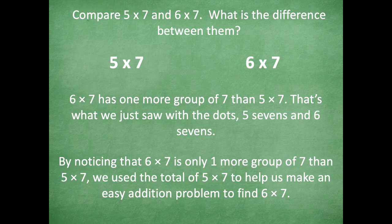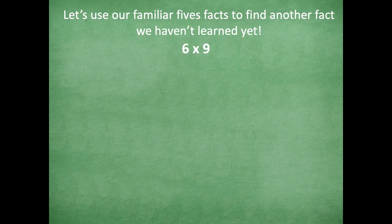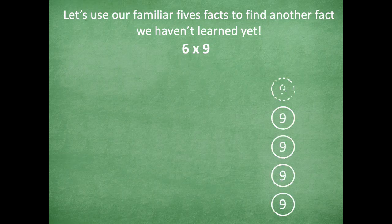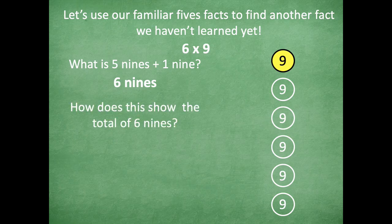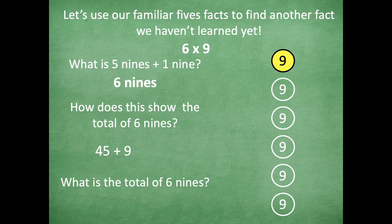Okay, so let's try this with another one. Let's use those five facts to help us find another one we haven't learned. I'm going to model six times nine. What's five nines plus one nine? Yeah, six nines. Five nines gives us 45, plus one more nine gives us plus nine. So 45 plus nine equals 54. We might not have learned our sixes yet, but we've learned our fives. So we can use those fives and just add one more group to it.